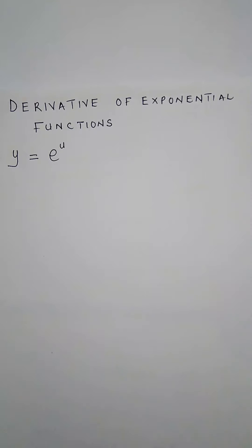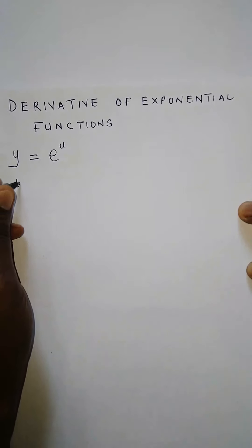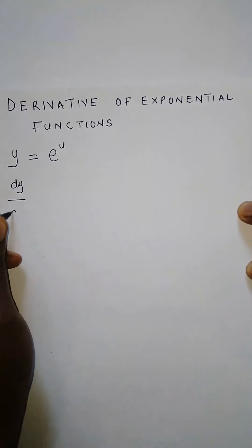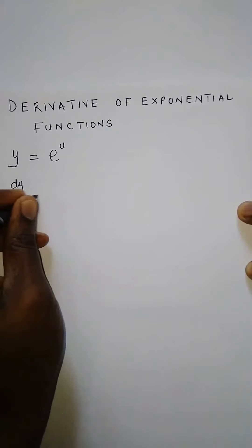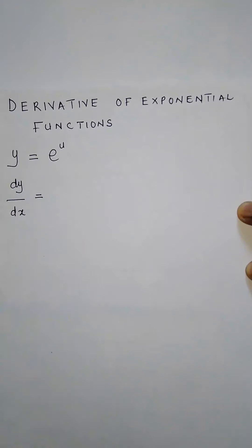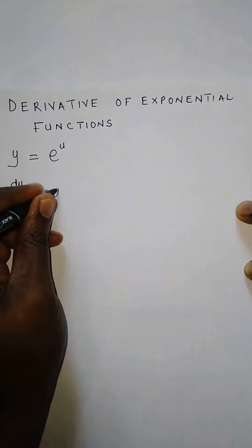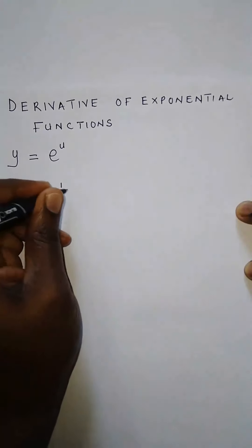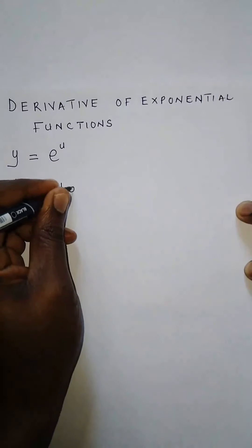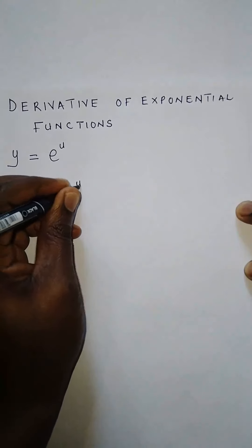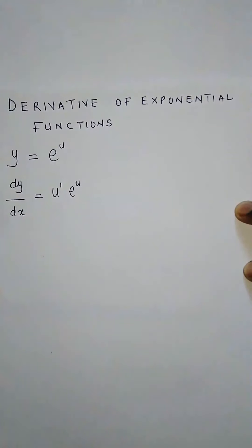The derivative of this function, dy/dx, is simply equal to the derivative of the function u — we call it u prime — multiplied by the given exponential function. So this is how we find the derivative of an exponential function.